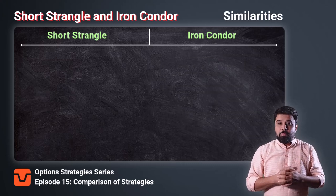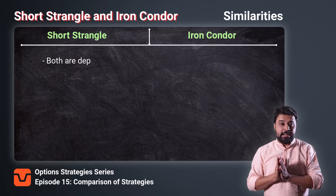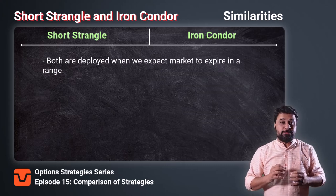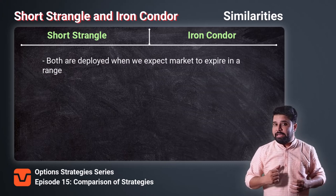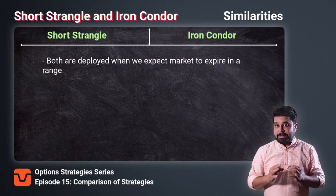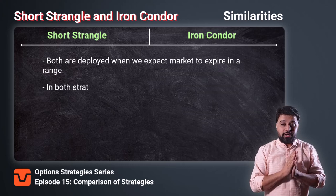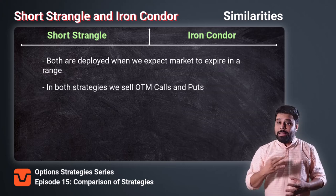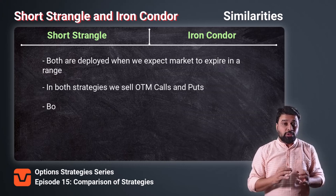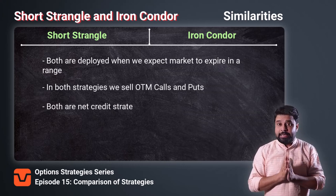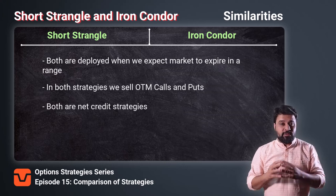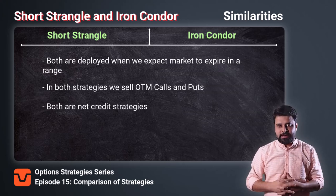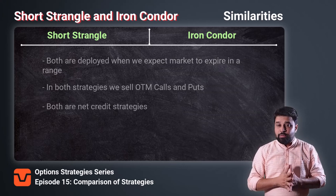Now let's look at the similarities and the differences between these two strategies. First, similarities. Both strategies are deployed when you expect the market to expire in a range. Number two, in both strategies, you sell OTM calls and OTM puts. Number three, both are net credit strategies, which means you will receive the premium when you deploy these strategies.